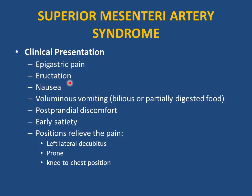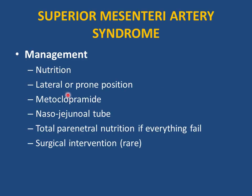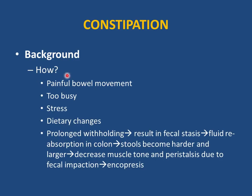Clinical presentation of SMA syndrome: epigastric pain, eructation, nausea, voluminous vomiting (bilious or partially digested food), postprandial discomfort, and early satiety. Pain is relieved by left lateral decubitus, prone, or knee-chest position. Diagnosis: upper GI showing duodenal cut-off just to the right of the midline with proximal duodenal and gastric dilation. Management: nutrition, lateral or prone positioning, metoclopramide, naso-jejunal tube to bypass the obstruction, TPN if all else fails, rarely surgery.